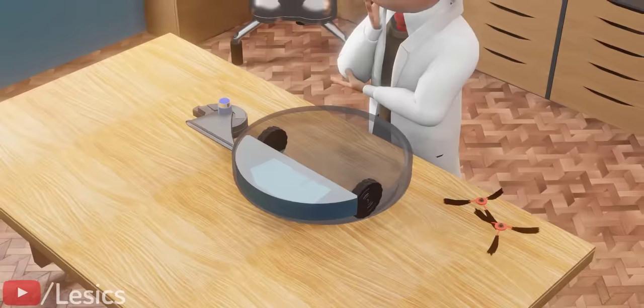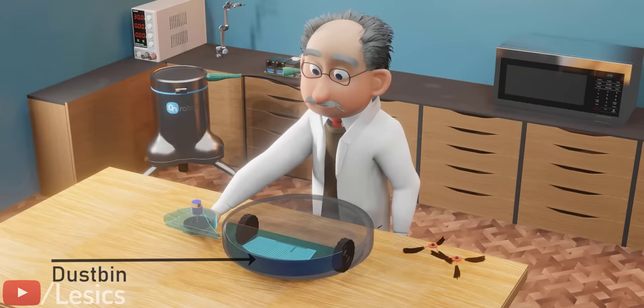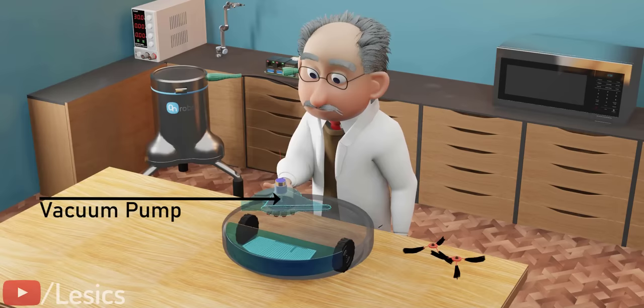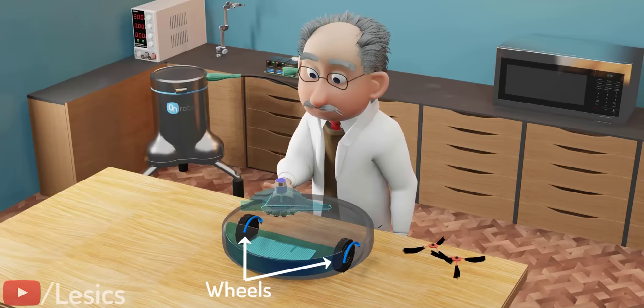The basic component required to collect the debris is this vacuum pump, similar to your normal vacuum cleaner. These two tractor wheels along with a tiny caster wheel help the machine move.